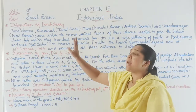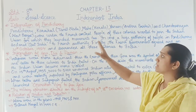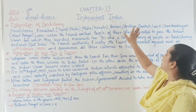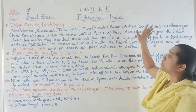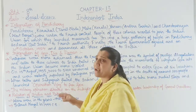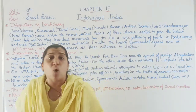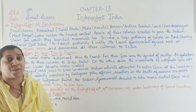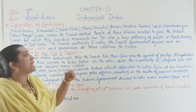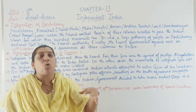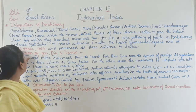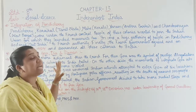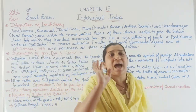Pondicherry, Karikal in Tamil Nadu, Mahé in Kerala, Yanam in Andhra Pradesh, and Chandernagore in West Bengal — which were controlled by the French colony — were handed over to the Indian Union on 31st October 1954.